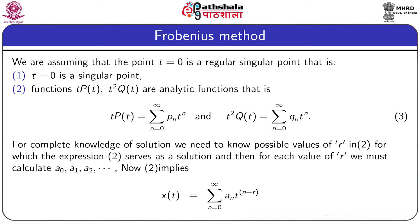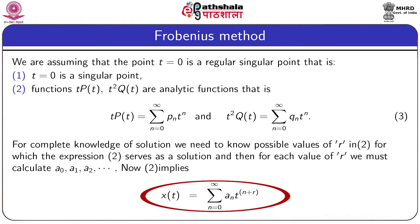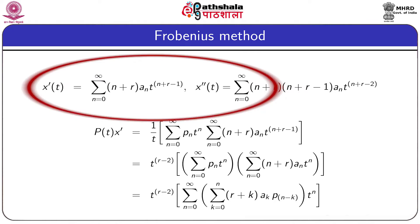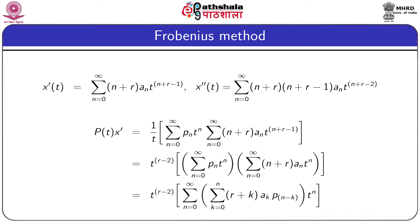For a complete solution we need to know possible values of r in equation 2 for which expression 2 serves as a solution, and then for each value of r we must calculate a₀, a₁, a₂, and so on. Equation 2 implies x(t) = Σ(n=0 to ∞) aₙt^(n+r). Differentiating twice we get x'(t) = Σ(n=0 to ∞) (n+r)aₙt^(n+r−1) and x''(t) = Σ(n=0 to ∞) (n+r)(n+r−1)aₙt^(n+r−2).